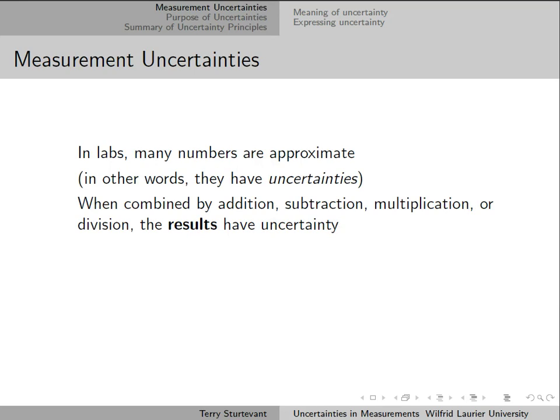So when these numbers are combined by addition, subtraction, multiplication, or division, then the results also have uncertainty.